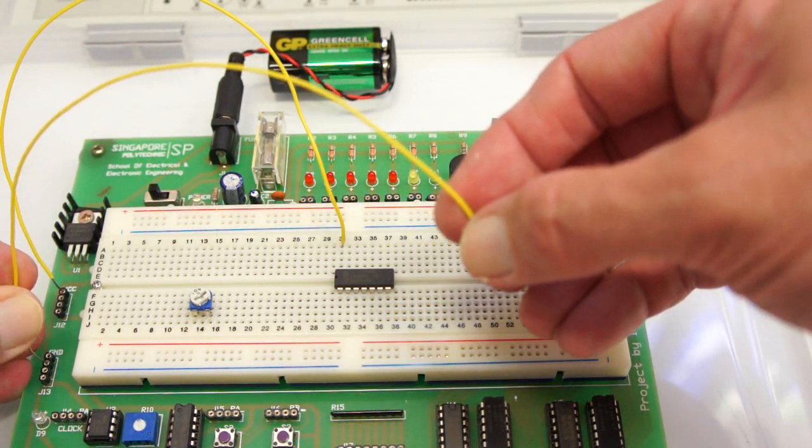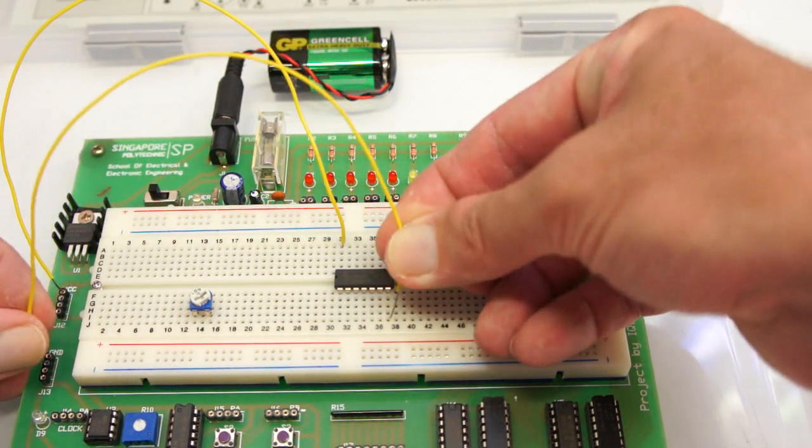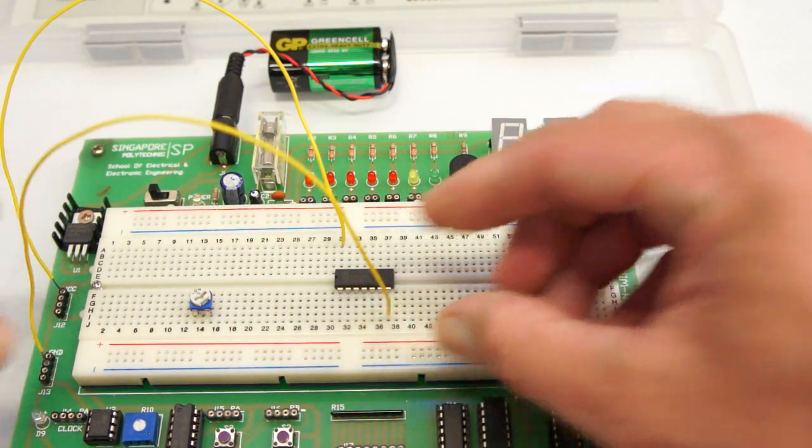Then we have ground, which goes to the opposite corner. Let's push straight down.